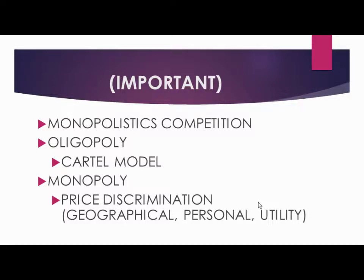Oligopoly is another type of imperfect competition where there are few sellers dealing in either homogeneous or heterogeneous products. The number of sellers is smaller compared to monopolistic competition. Entry into the market is not easy because with fewer sellers everyone is aware of each other. There is an enhanced role of government due to the lower number of sellers, and mutual interdependence among firms is a key feature.